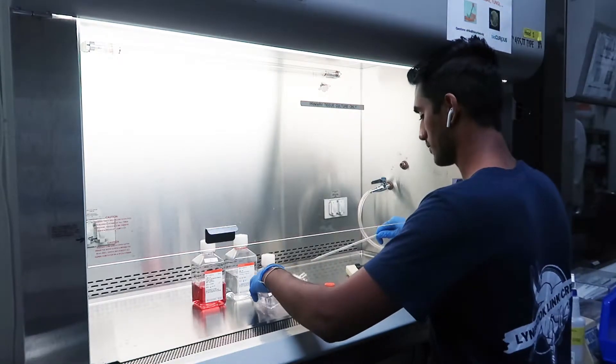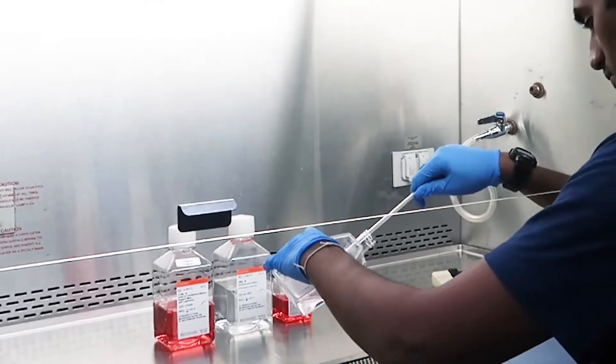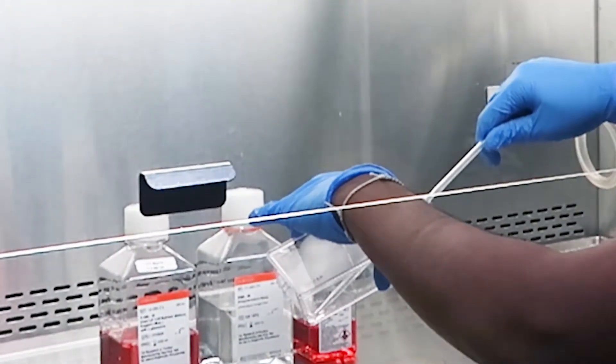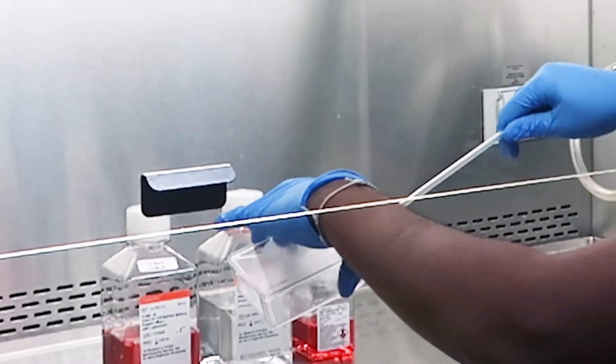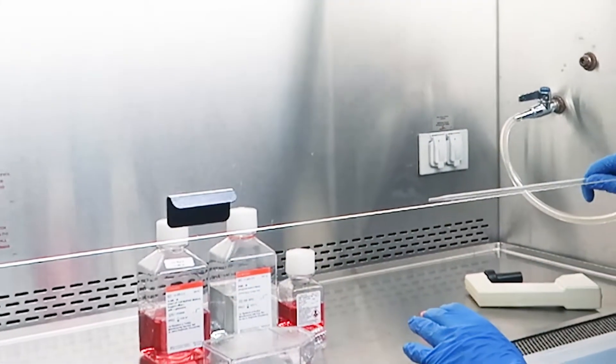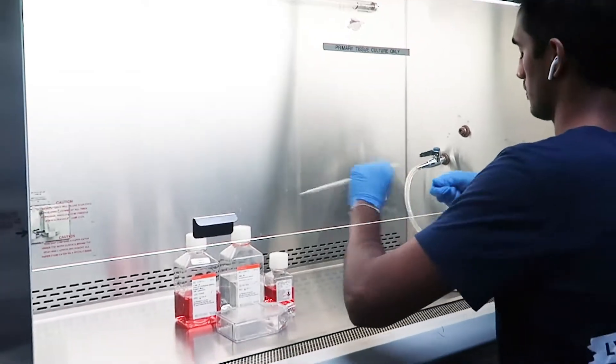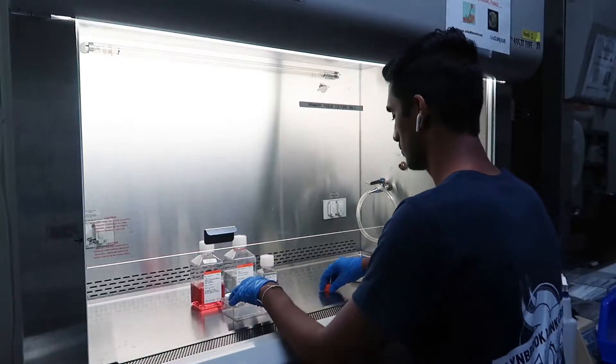Make sure that your flask is tilted once again, because you don't want your aspiration pipette to touch the cells. Once you do this, you should have a flask with only cells adhered to the bottom.